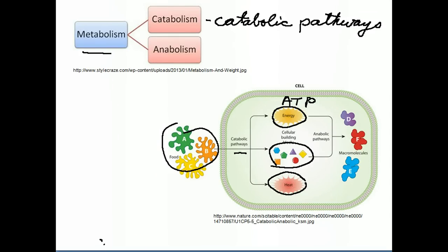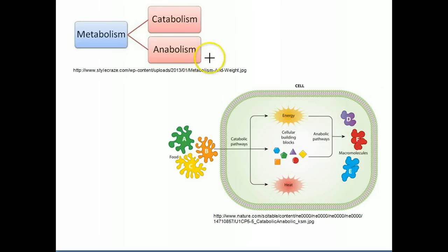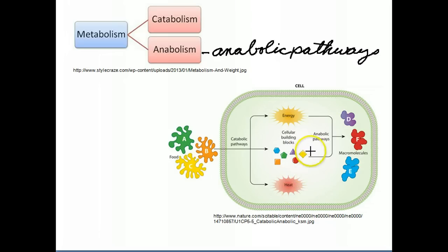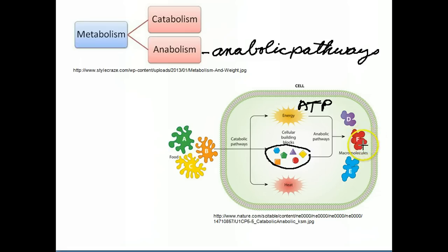Now let's erase these marks and talk about anabolism. Anabolism occurs through anabolic pathways. We're going to start with small molecules. These small molecules, with the aid or assistance of ATP of energy, we're going to convert those small molecules into larger macromolecules.